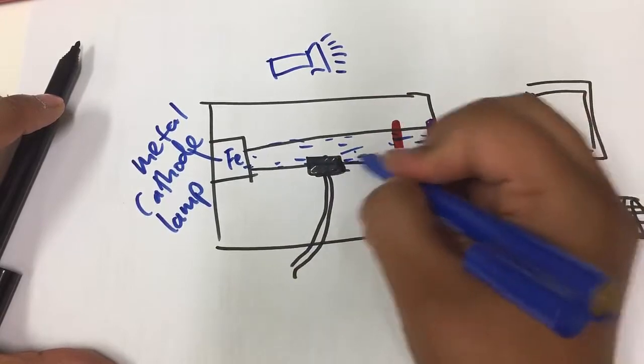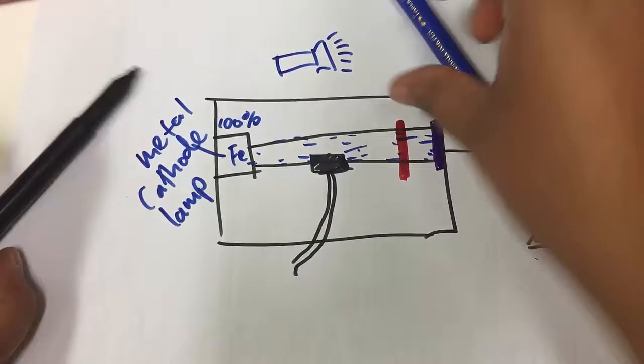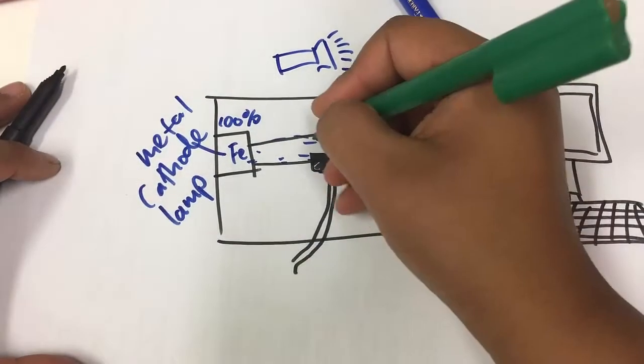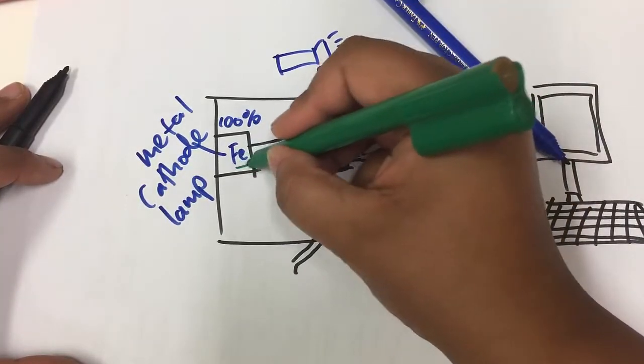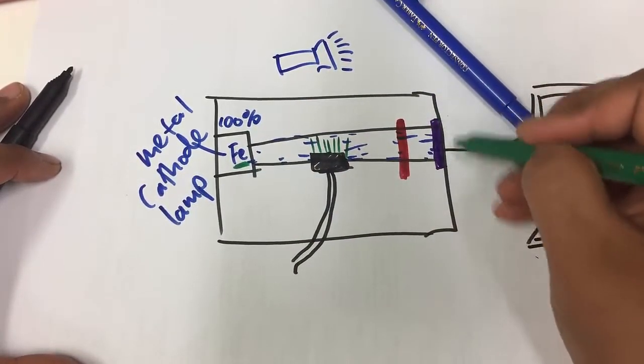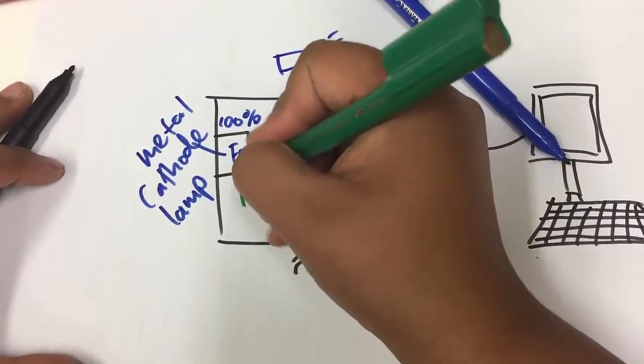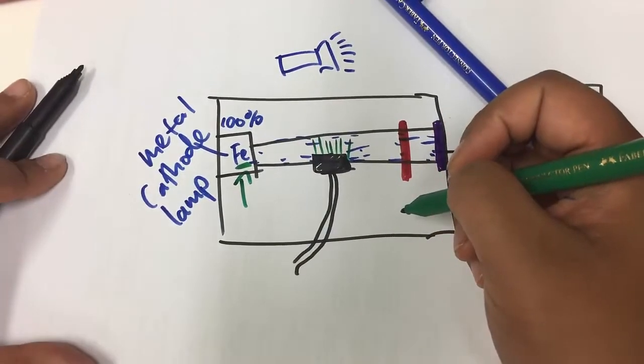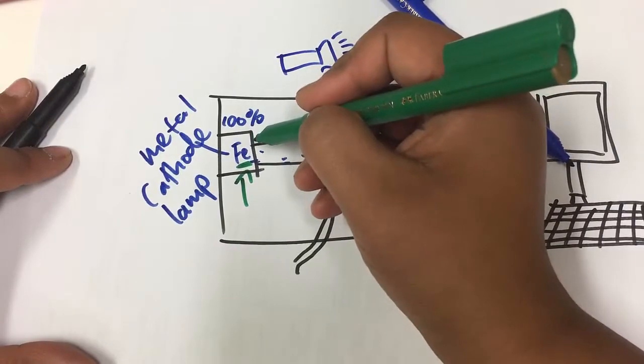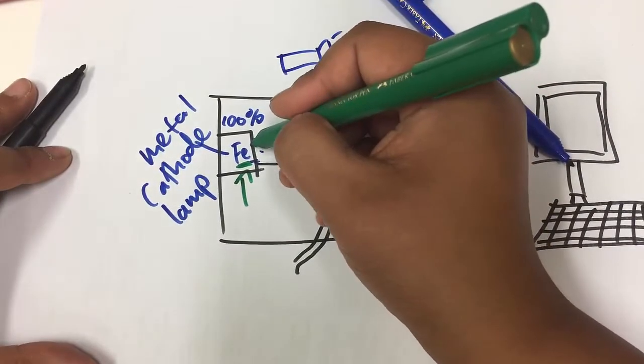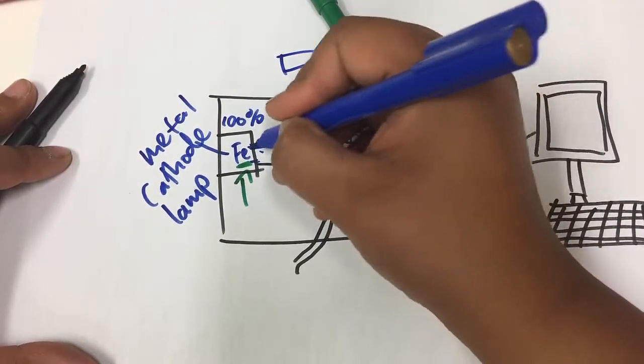So a metal cathode lamp, that is made up of some sort of metal. It has to be specific to the metal that we want to analyze. Let's just say that this one is an iron metal cathode lamp. And when we say lamp we mean lamp like a torch. So just like a torch produces light, that's what this is doing. So it's producing some sort of light that's going across and hitting a detector.